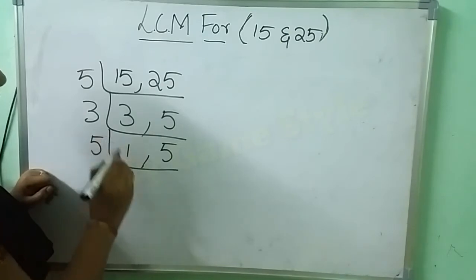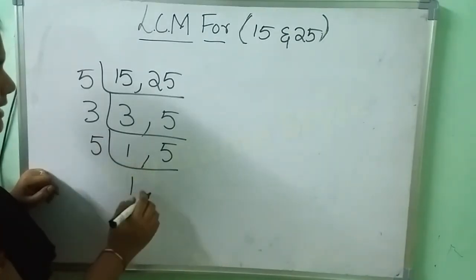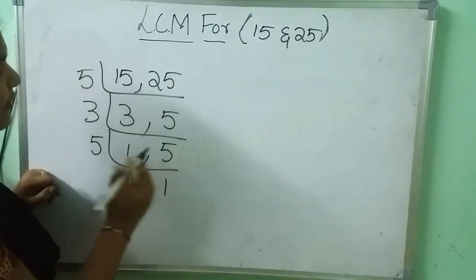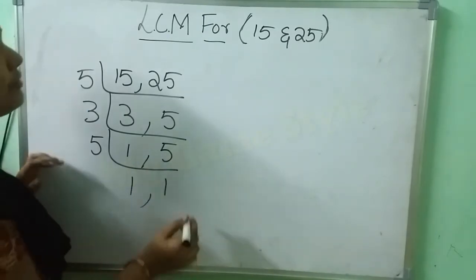Then I am taking 5 table here. This 1 has it is. 5 times 1 is 5. 5 times 1 is 5.